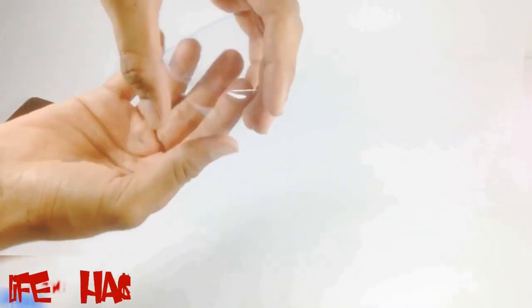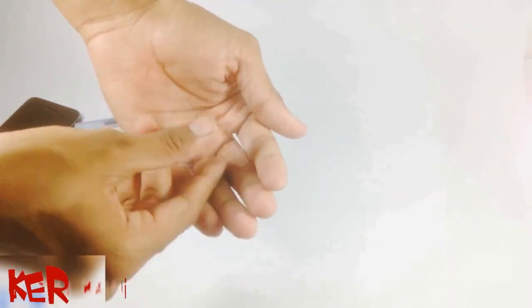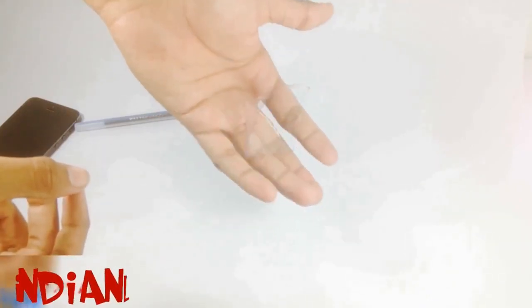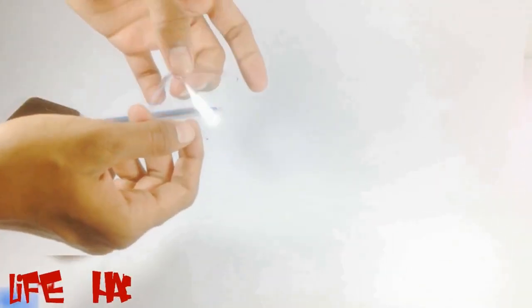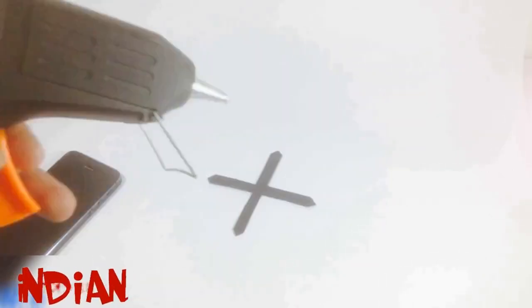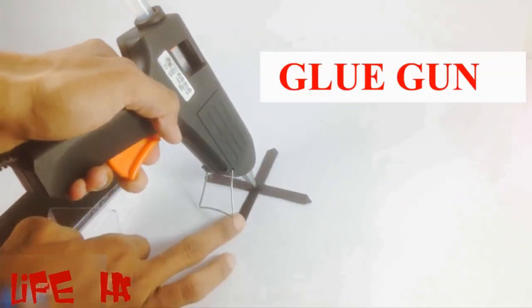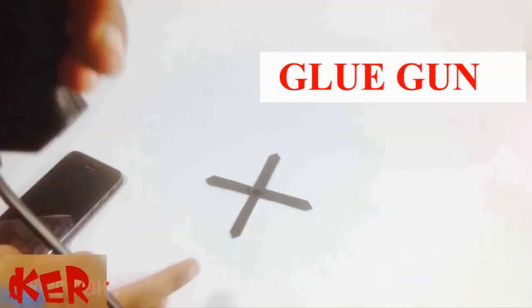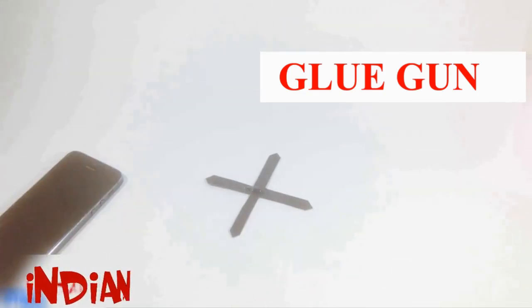Now our upper body is ready. Now we need to make a stand for this. For that, cut a cardboard paper into a cross shape and fix the upper body on the stand with a glue gun or any other glue.